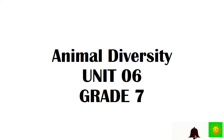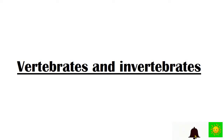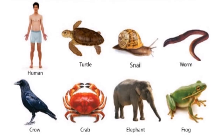Hi children, welcome to Edu Cup. Today you are with a new lesson from Grade 7 Science — the sixth lesson: Animal Diversity. Under this lesson we are going to discuss vertebrates and invertebrates. This is our first subtopic. The animal world consists of millions of different animals with a wide diversity. You and your friends may have grouped animals based on different criteria.